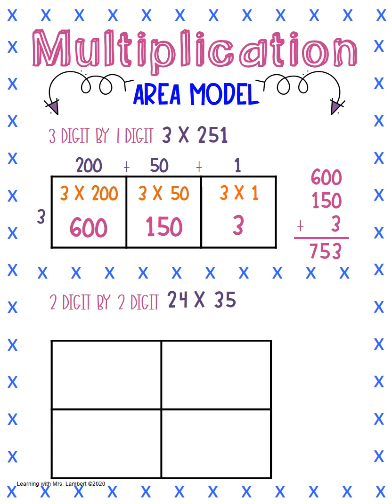We're going to do the same thing and break our numbers up by place value. We're going to start with our smaller number and put that along the side, and that would be 24. So that would give us 20 plus 4. Then we're going to take our larger number, 35, and break that up by place value and put that at the top. So we have 30 plus 5.